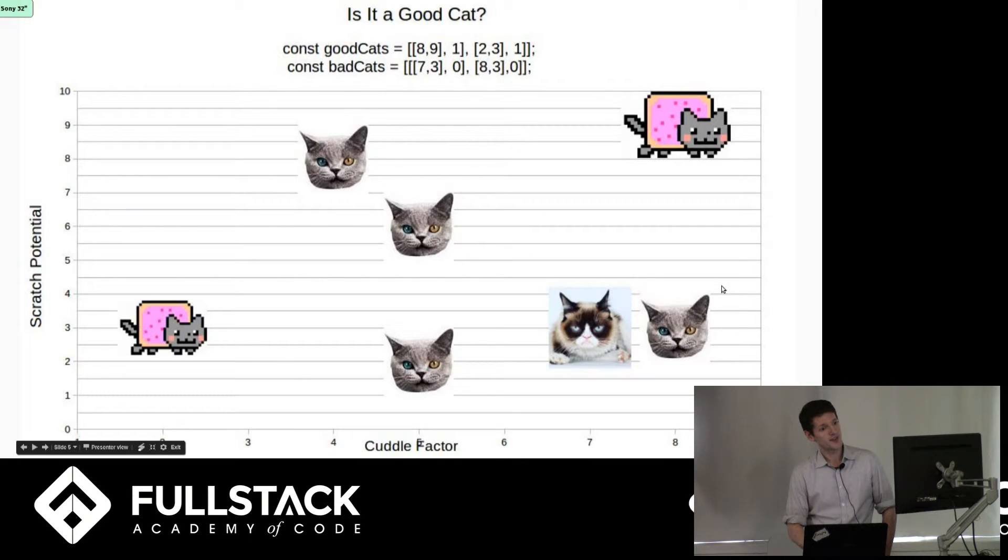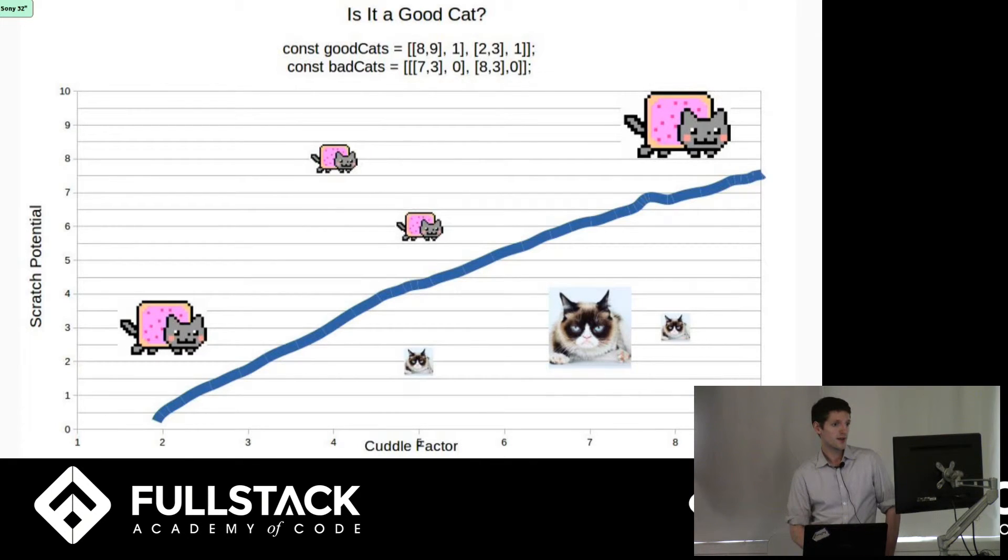Okay, so the next step in a machine learning process would be to categorize some of the data points. In this case, we turned two of these into Nyan Cat and one into another famous cat, whose name I don't remember. We feed this training data into the SVM, and the next step is the SVM takes that data and divides up all of our points using this line.